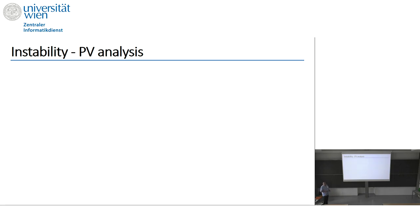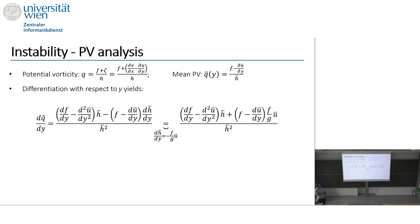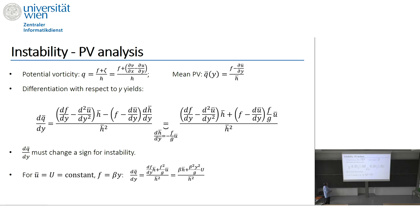Regarding why there is instability for a y-dependent mean flow but not for uniform mean flow: using the PV framework, the mean PV gradient Q_y is defined and must change sign for instability to occur. For constant u-bar, this expression for Q_y is always positive for positive u, so no instability is expected.